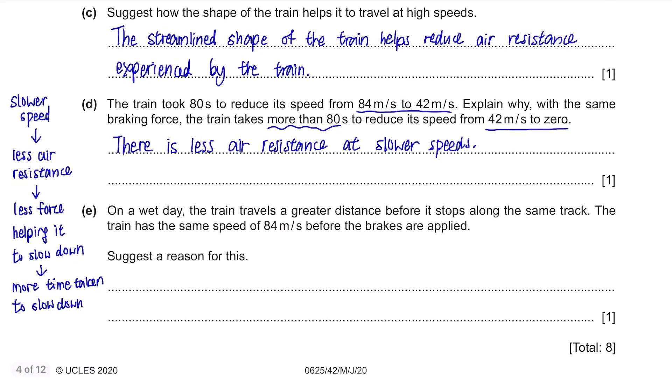Part E. On a wet day, the train travels a greater distance before it stops along the same track. The train has the same speed of 84 m per second before the brakes are applied. Same thing for cars and bikes. On a wet day, when you stop, you're gonna travel slightly further than you usually do. This is because the roads are wet and slippery and there's less friction so you slide along the road. If we apply this concept to a train in terms of physics, we say the friction force between rails and train is reduced on a wet day so it travels a greater distance before it stops.